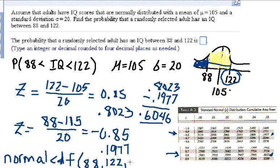Comma, 105, comma, 20. And if you do that, you're going to get the same answer we did using these two other methods, 0.6047.